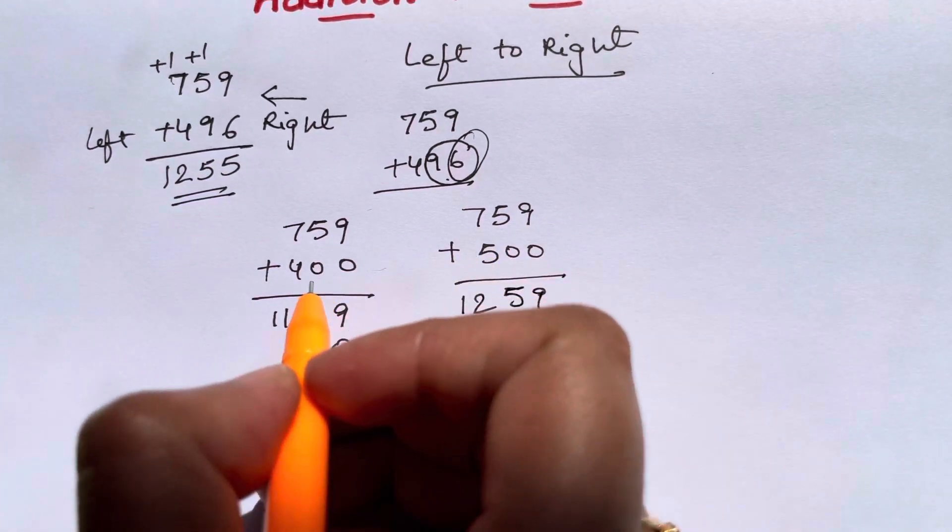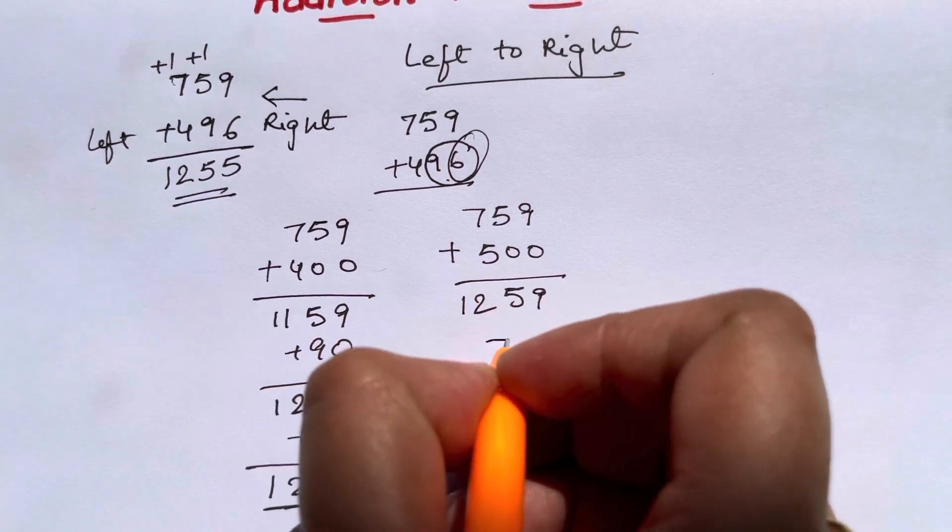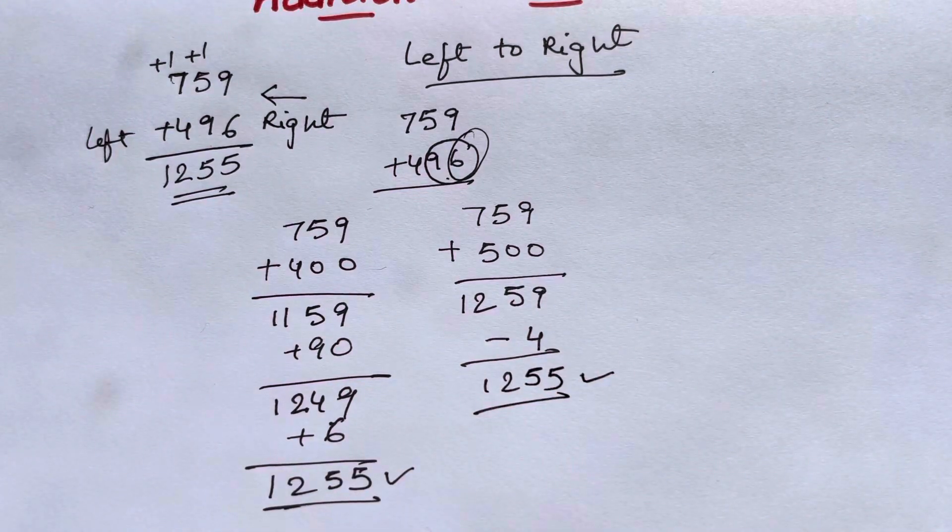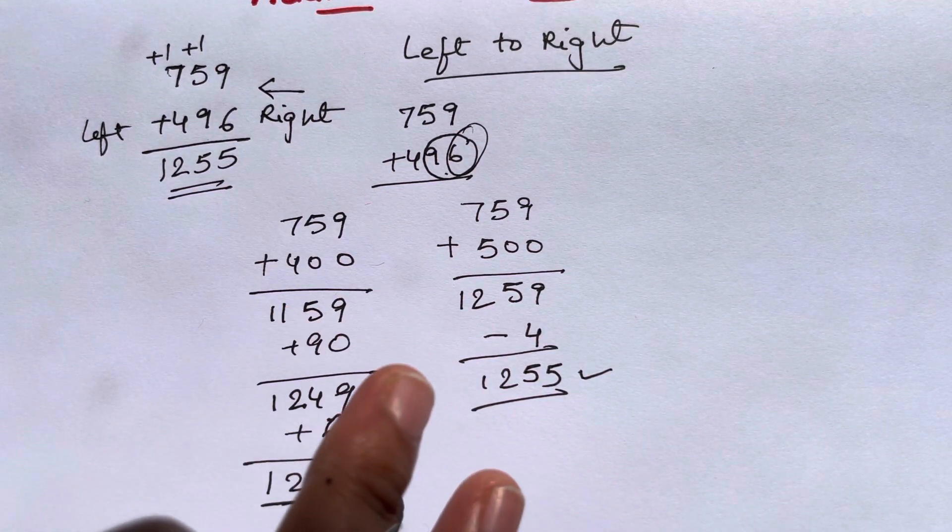How much have you rounded off? 496, you've added 4 to get 500. You will subtract that 4, that will give you 1255. Wasn't this more easier than that? So you have to be creative and faster in doing calculations.